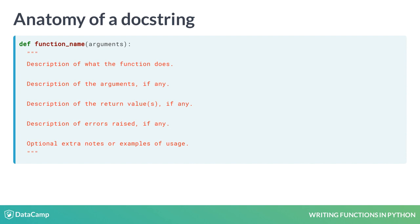Every docstring has some, although usually not all, of these five key pieces of information: what the function does, what the arguments are, what the return value or values should be, info about any errors raised, and anything else you'd like to say about the function.